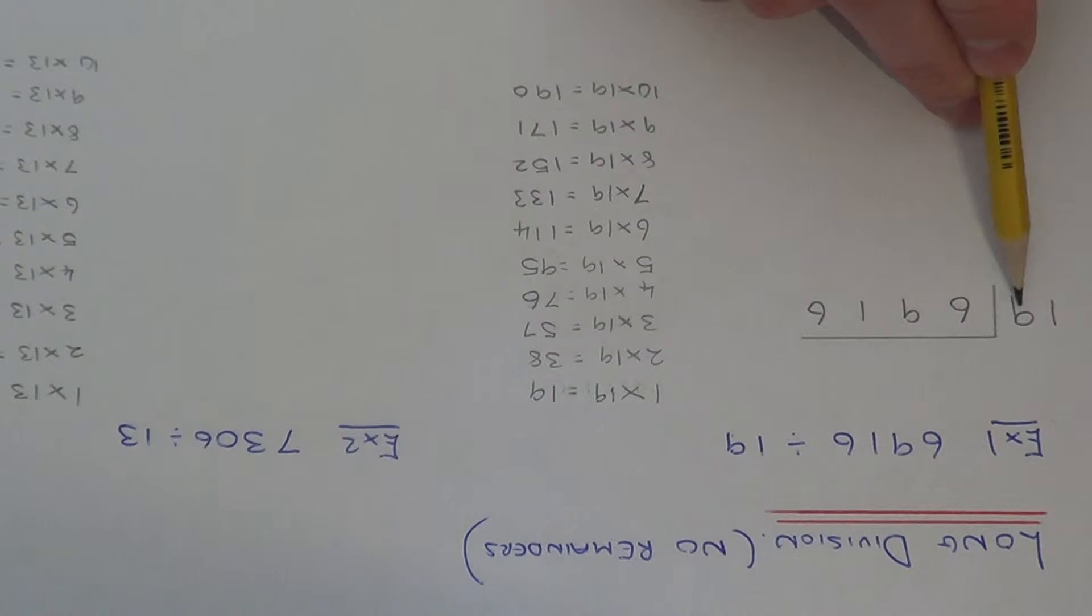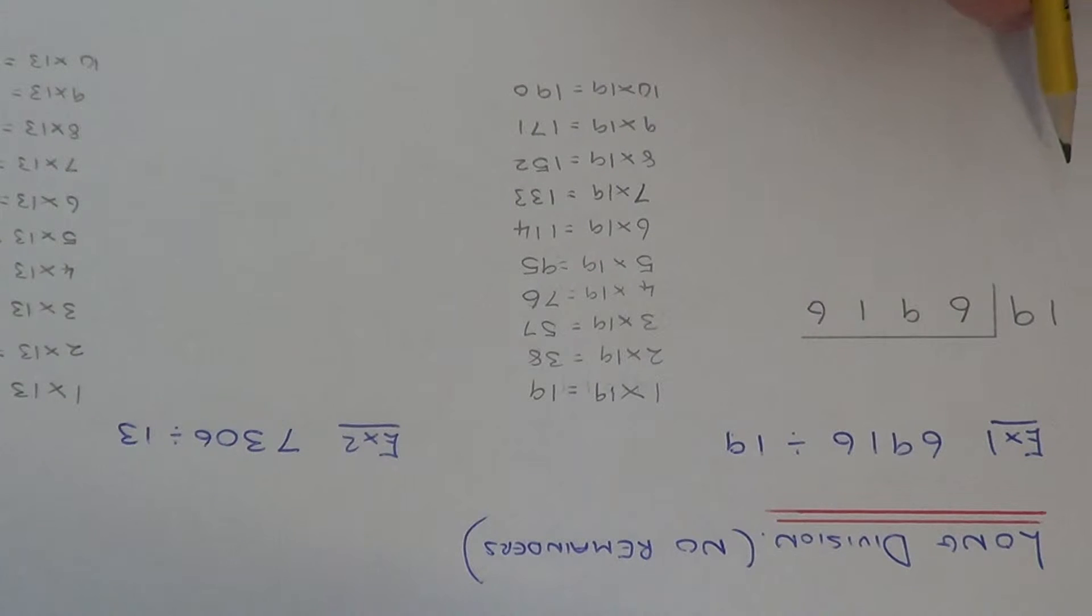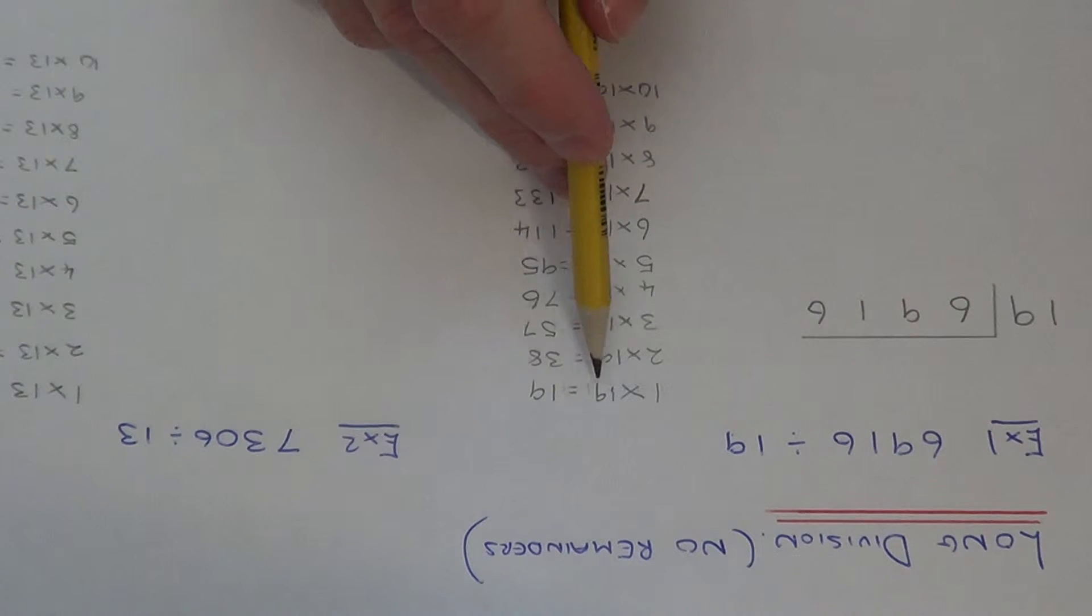So first of all, we'll do 6 divided by 19. Well we can't do that, so instead let's do 69 divided by 19. So if I look at our multiples of 19, we've got 19, 38, 57, 76.